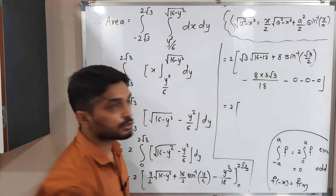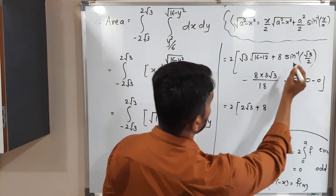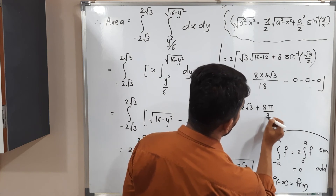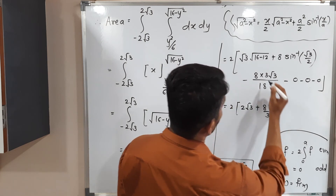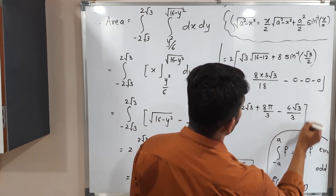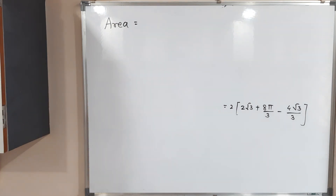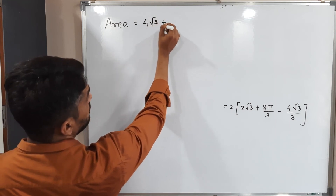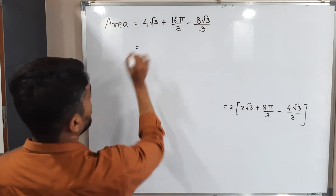Simplifying: √(16-12) = √4 = 2, so the first term gives 2√3. sin⁻¹(√3/2) = π/3. The cube term: (2√3)³ = 8·3√3 = 24√3, divided by 18 gives 4√3/3. After multiplying by 2: 4√3 + 16π/3 - 8√3/3.